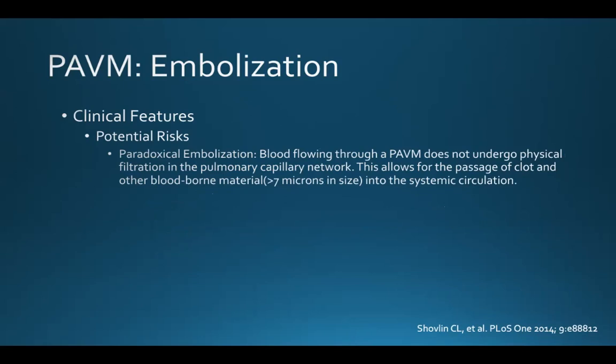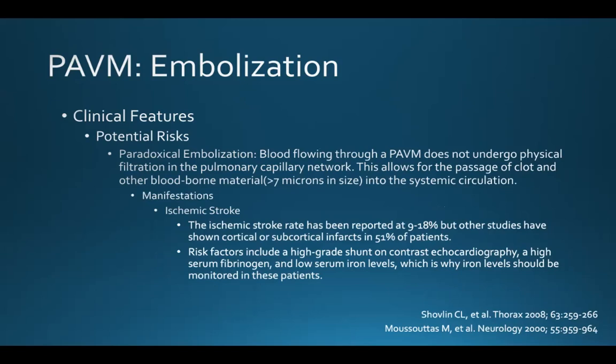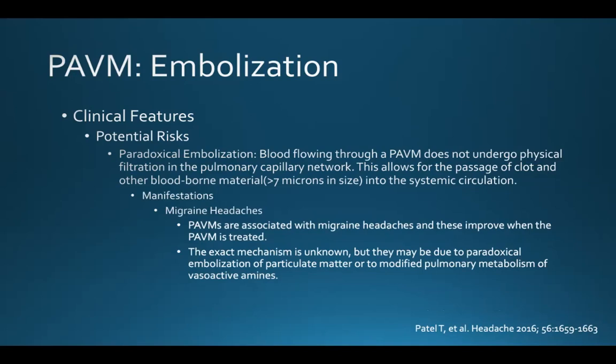Another risk of a pulmonary AVM is paradoxical embolization. Blood flowing through a PAVM doesn't allow physical filtration in the pulmonary capillary network, allowing passage of clot and other blood-borne material greater than 7 microns into the systemic circulation. Ischemic strokes have been reported in 9 to 18% of patients with pulmonary AVMs. Risk factors include a high-grade shunt, high serum fibrinogen, and low serum iron levels. PAVM patients can also suffer from migraine headaches, which improve when the PAVM is treated, possibly due to paradoxical embolization or modified pulmonary metabolism of vasoactive amines.